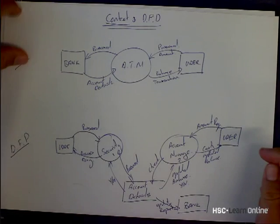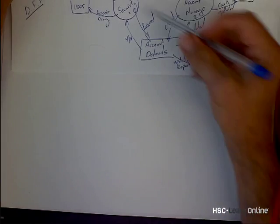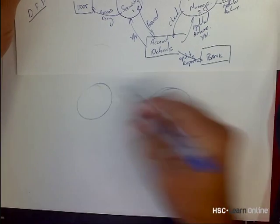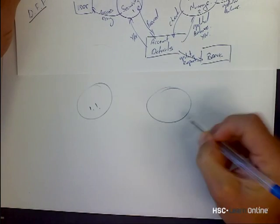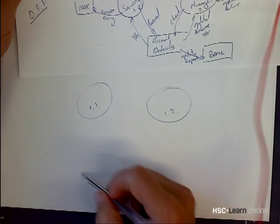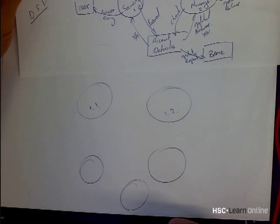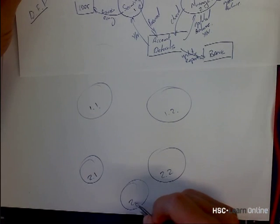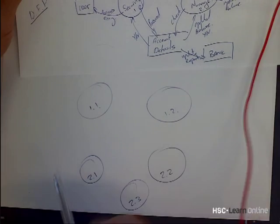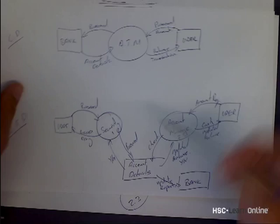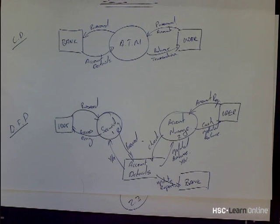The next level data flow diagram from this kind of diagram is to start saying, okay, let's look at the security system in a bit more detail. You could probably break that down into two systems, which would be 1.1 and 1.2. Then I'd also look at the account management system and might find it actually has three different subsystems: 2.1, 2.2, and 2.3. You'd build a second-level data flow diagram from those. That's the relationship between context diagrams and data flow diagrams and how you start building them.